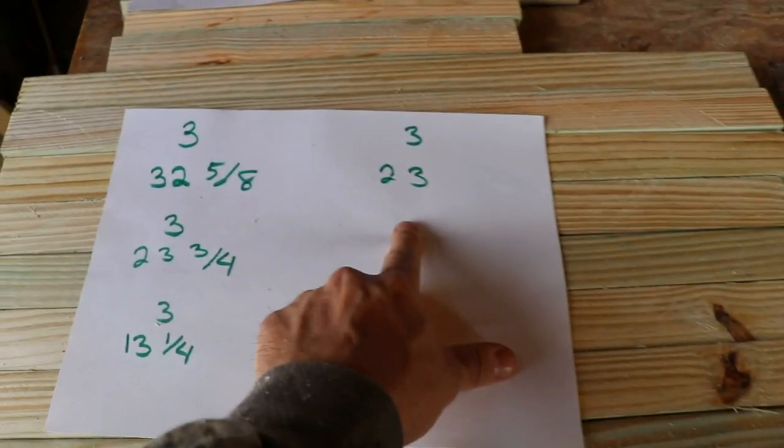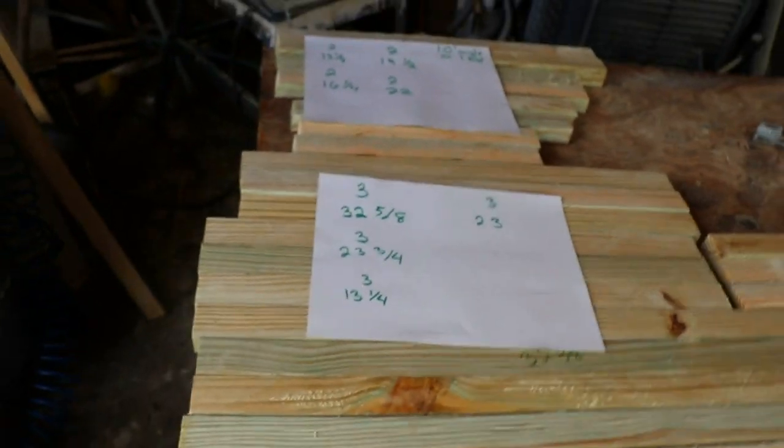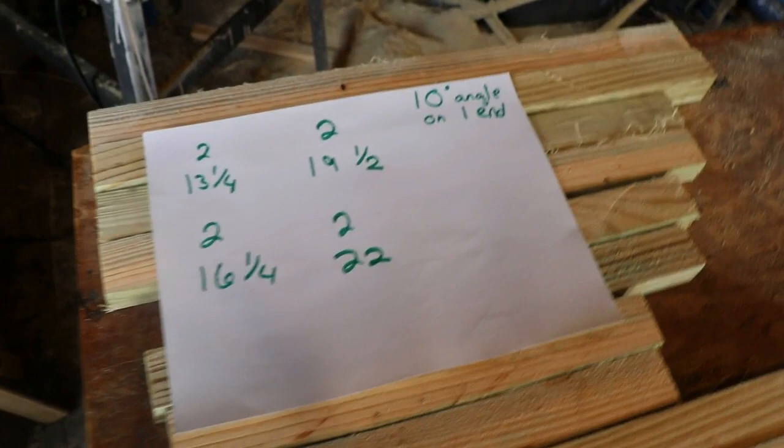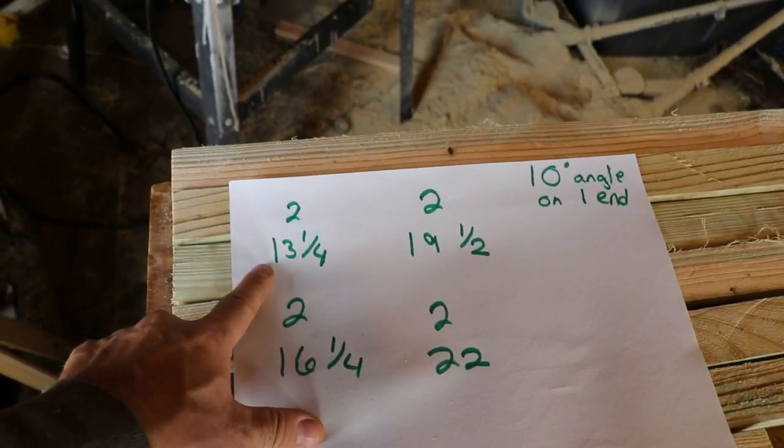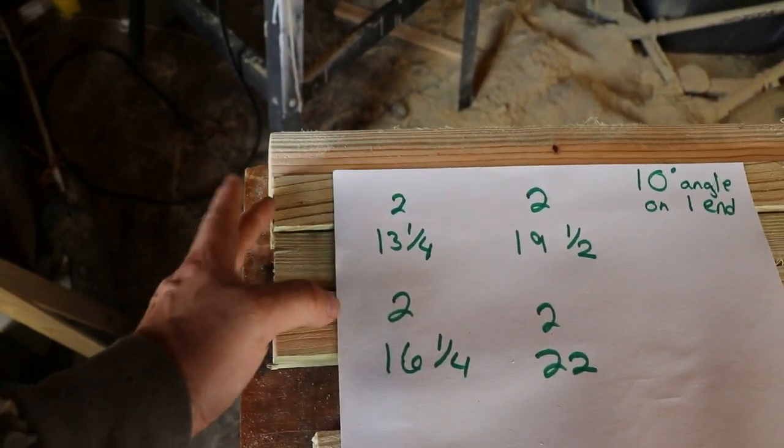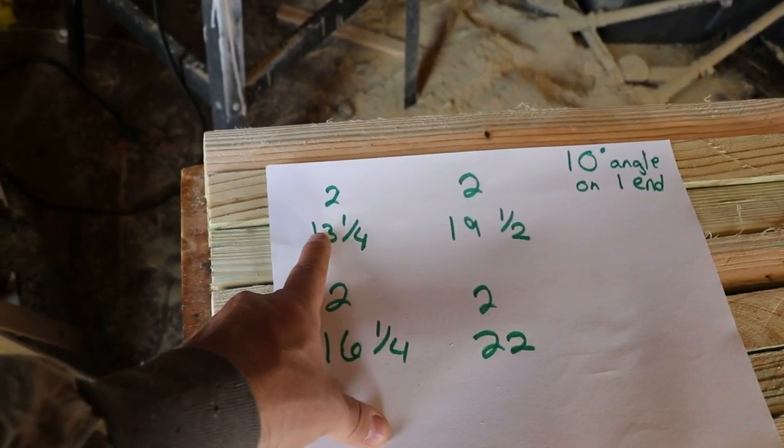Three at 23 inches, and then you're going to need all of these to have a 10-degree angle. So you cut them down to the 13 and 1/4, and then you'll cut a 10-degree angle. There's a little angle on just one end, not on both ends.